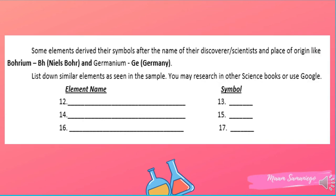Some elements derive their symbols after the name of their discoverer, scientist, or place of origin. Tignan nyo ang example: element bohrium, chemical symbol Bh, was discovered by Niels Bohr. Meron din namang elements na na-discover sa ibang bansa — tulad ng germanium, symbol Ge, discovered in Germany. Ngayon it's your turn to list down similar elements, using your science books or Google if needed.